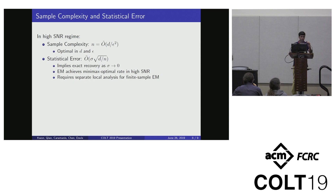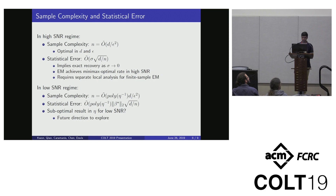Hello, everyone. Hi, I'm Arun. This talk will be on how to do robust regression in the presence of oblivious adversaries. This is joint work with Kush Bhatia, Pradhi, Pravikumar, and Pratik Jain.